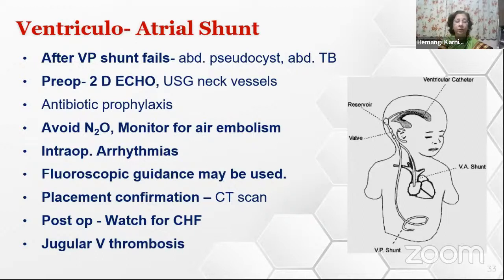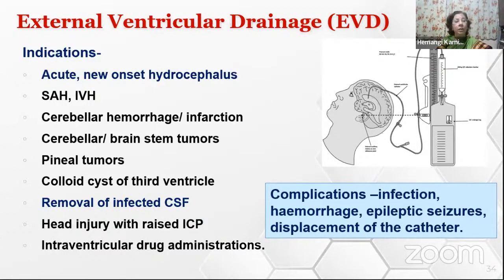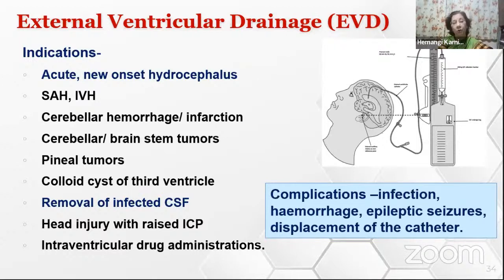Coming to another temporizing measure—external ventricular drainage. The common indications are acute or new-onset hydrocephalus, intraventricular hemorrhage, posterior fossa tumor where definitive surgery can be done later, but the most important indication is infected CSF. Infected CSF cannot be diverted into another body cavity; it has to come out while the surgeon treats the patient with antibiotics. The EVD itself can be a source of infection, so within a few days after the CSF is cleared, the definitive procedure can be done.